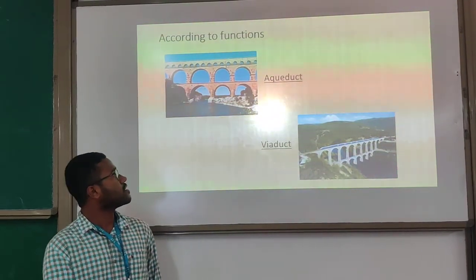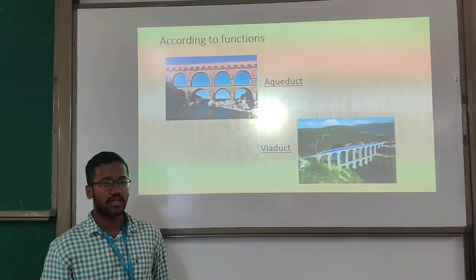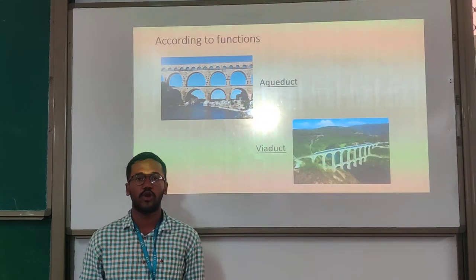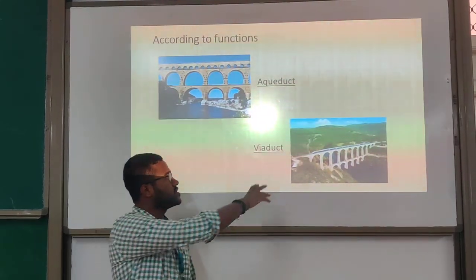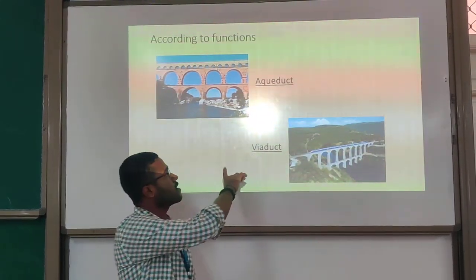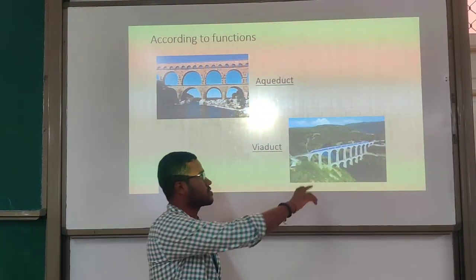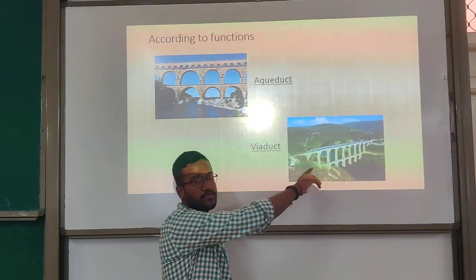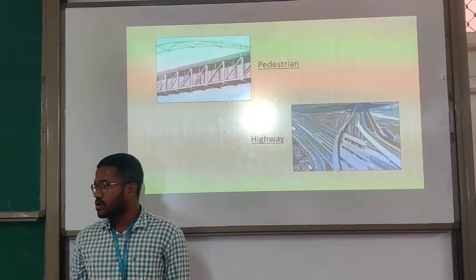The aqueduct is a structure which allows water to pass from one point to another. The viaduct is similar to the aqueduct, but in a viaduct, transportation can be done from the upper side of the structure, as shown in this picture.